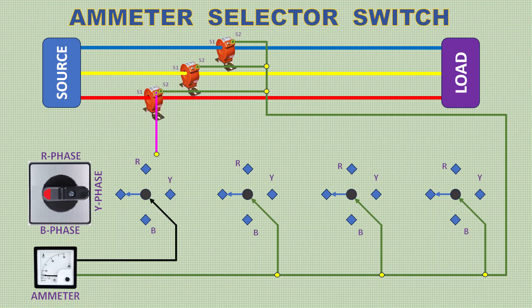Then connect CTS1 terminal of R phase to the Selector Switch like this.